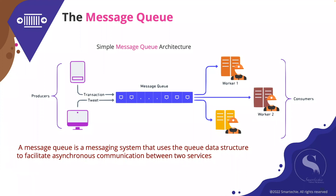The message queue is comprised of two components: the message and the queue. The message is the data that is passed from the producer to the consumer — it can be in the form of a request, information, or metadata. The queue is a temporary buffer that stores messages and uses the first-in, first-out methodology to pass messages from producer to consumer.